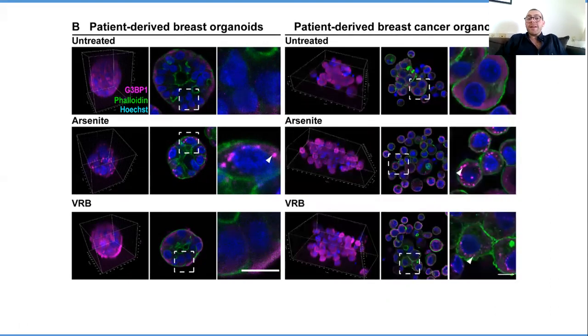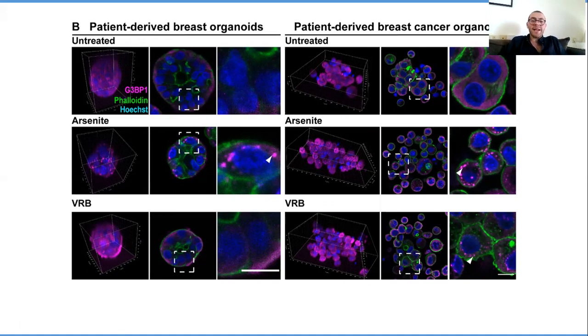But when we treated our breast cancer organoids, we all of a sudden started seeing stress granules form in the VRB treatment as well. So this made us ask two questions: Why are the cancer cells behaving differently than the healthy cells? And can we leverage these stress granules to better treat the cancer?